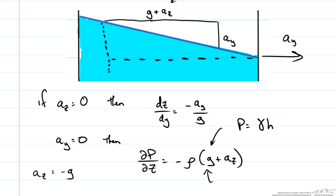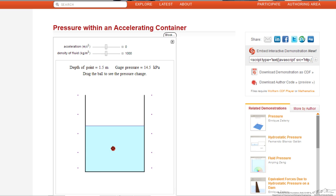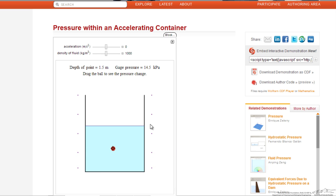One thing I want to show you is a simulation on the Wolfram demonstration site. On this site there is a number of simulations but one that is pretty useful is pressure within an accelerating container. You can play around with what direction you want the container to accelerate and you can see how it affects the free surface of the fluid. You can also change the density of the fluid. What that is going to affect is the gage pressure. The gage pressure is being reported for this red dot.